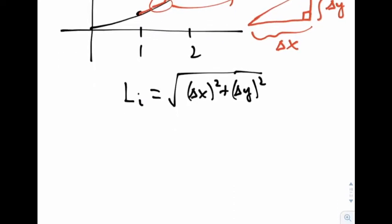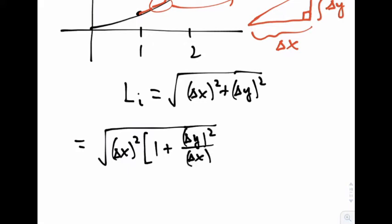Well, I can rearrange this a little bit and I can say, all right, underneath this radical, I'm going to factor a delta x squared out of each of these guys. If I factor it out of the first term, I'm left with just the 1. If I factor out of the second term, I'm left with delta y squared over delta x squared. And you can see if I distribute this delta x squared back through, I'm back to the expression I started with.